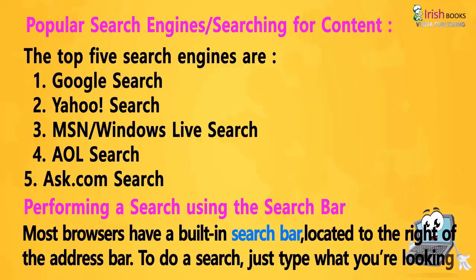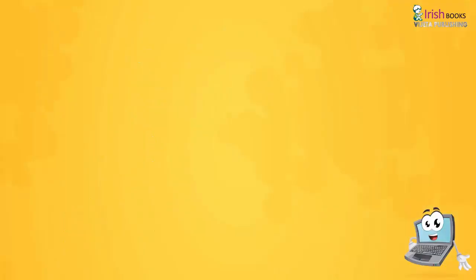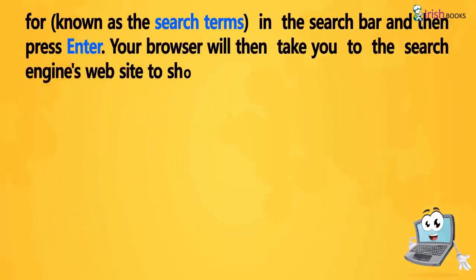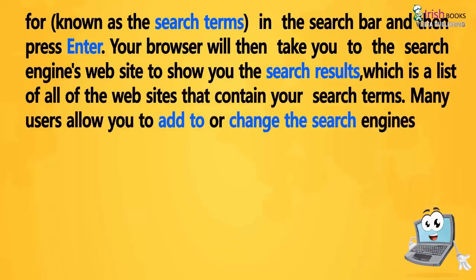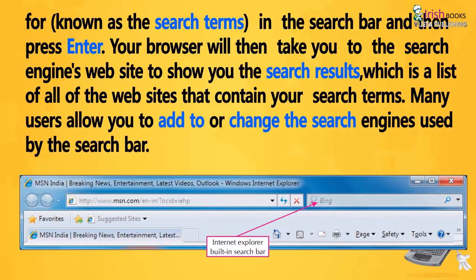Performing a search using the search bar: Most browsers have a built-in search bar located to the right of the address bar. To do a search, just type what you are looking for — known as the search terms — in the search bar and then press Enter. Your browser will then take you to the search engine's website to show you the search results, which is a list of all the websites that contain your search terms. Many browsers allow you to add to or change the search engines used by the search bar.